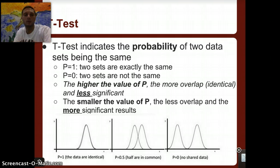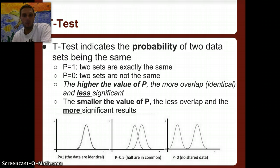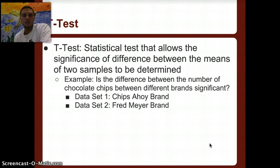Something else we're going to use is a t-test. A t-test indicates the probability of two data sets being the same, measured on a scale from 1 to 0. A p-value of 1 means the two sets are identical; 0 means they are not the same at all. A higher p-value means less significant difference, while a very small p-value means greater significance between the results.